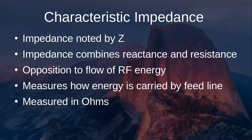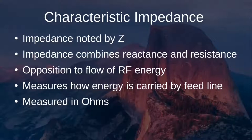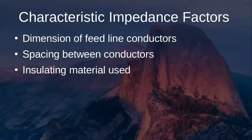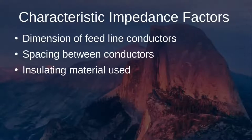All feed lines have impedance — characteristic impedance denoted by a capital Z. Impedance combines reactance and resistance and is essentially the opposition to the flow of radio frequency energy. It measures how energy is carried by a feed line and is measured in ohms. Factors affecting impedance include the dimensions of the feed line and conductors — longer feed lines have more impedance, thicker feed lines have less. Spacing between conductors and the insulating material used also affect impedance.